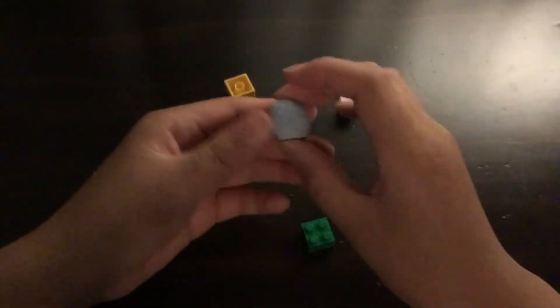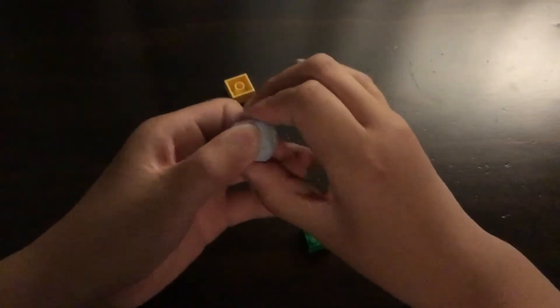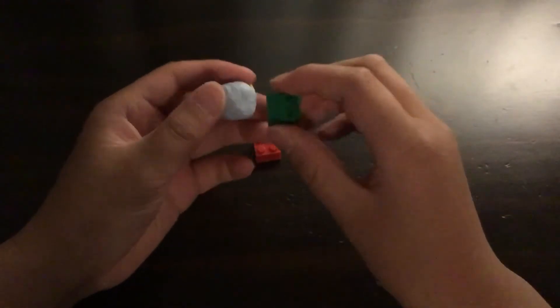Find Legos. Then take your putty or whatever sticky thing and make it into a square shape. So now it's a square. Now you just stick the Legos on.